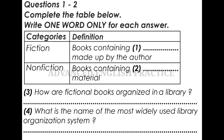All the books in a library can be classified under two main categories: fiction and non-fiction. Books of fiction contain stories that were made up by the author. Books of non-fiction contain factual material. When doing research, you use non-fiction books because you are looking for factual information.